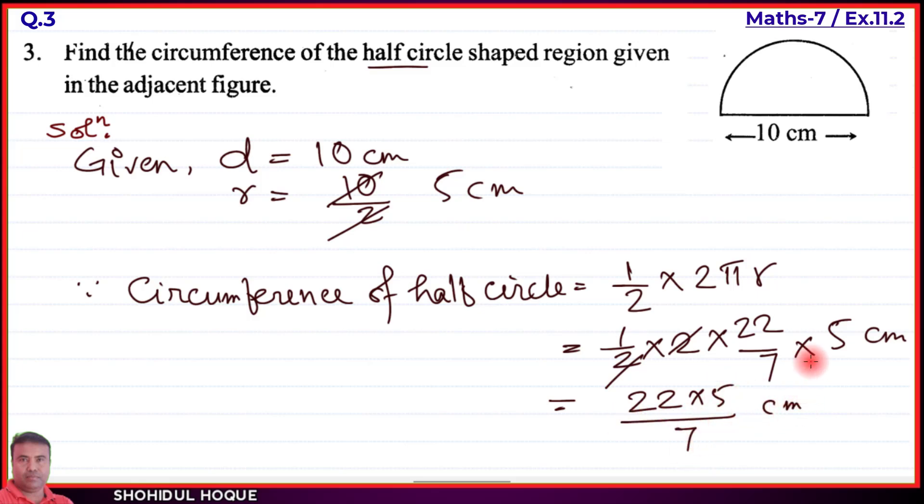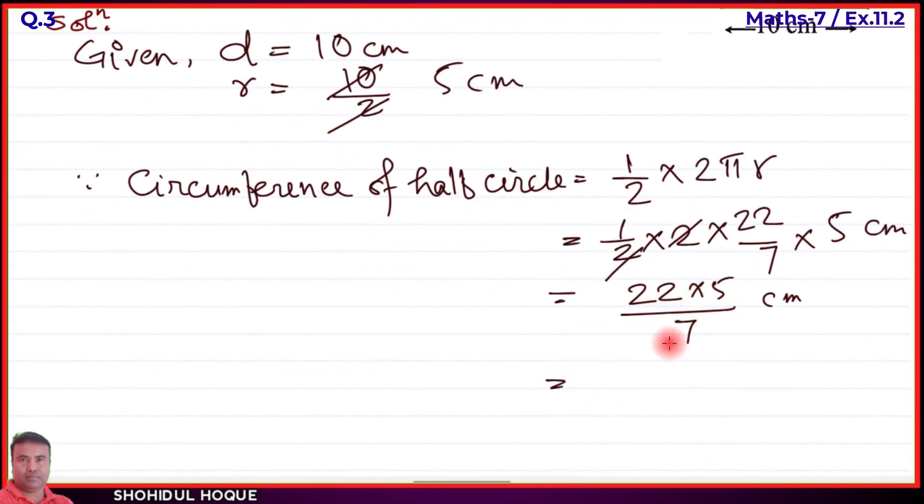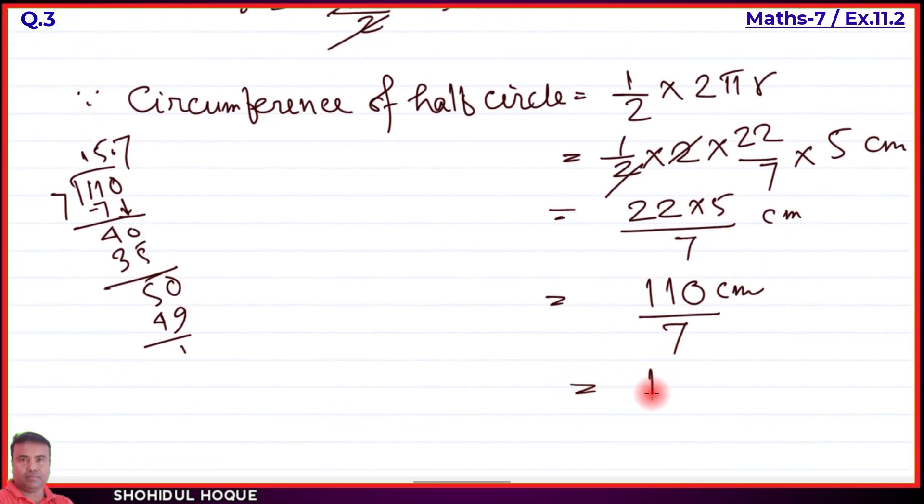Calculating: 22 times 5 divided by 7 centimeters. 22 times 5 equals 110. Dividing 110 by 7: 7 goes into 110 fifteen times with remainder 5. Adding decimal: 7 goes into 50 seven times, giving us 15.7 centimeters.